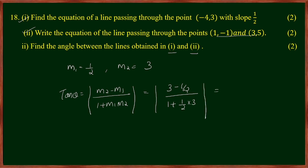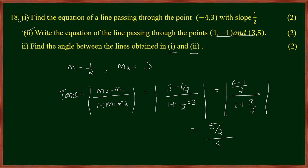So tan θ = 1, which means θ = 45 degrees. The angle between the two lines is 45 degrees.